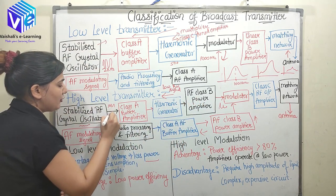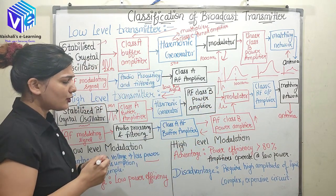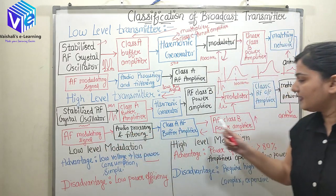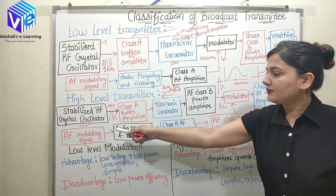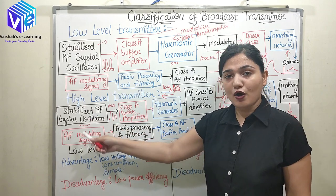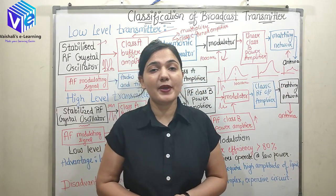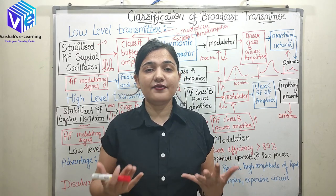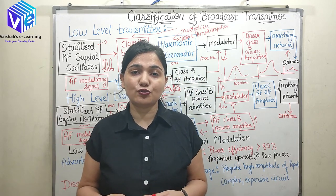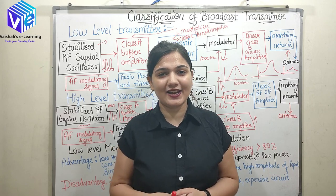So only if the input signal value is high will the amplifier produce high power output. The additional disadvantages of high level modulation are that it is complex and expensive. I hope you understood everything about the classifications of the transmitter. If you have any doubt, put it in the comments and I will try to resolve it. If you liked this video, share it with your friends, subscribe to the channel, and hit the like button. Thank you.